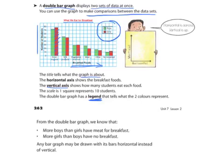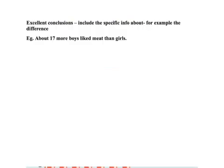From this graph, we can make some conclusions. We can conclude that more boys than girls have meat for breakfast. We can see approximately how many: it's close to thirty, but not quite, probably twenty-eight or so, compared to twenty. More girls than boys have no breakfast. We can see the girl column is just slightly larger than the boy column. We can definitely draw conclusions much easier when the two bars are right next to each other. Note that any bar graph can be drawn horizontally instead of vertically. It's good to work towards excellent conclusions that include specific information, for example, seventeen more boys like meat than girls.